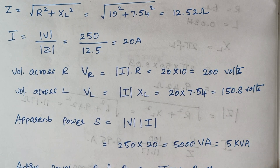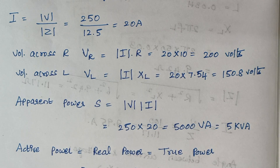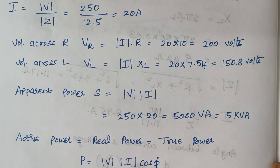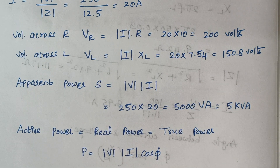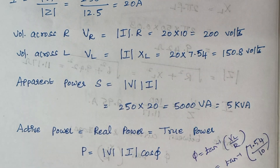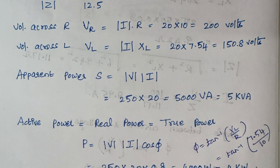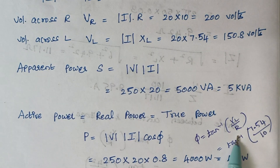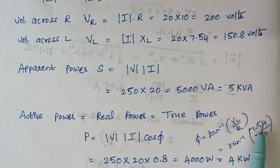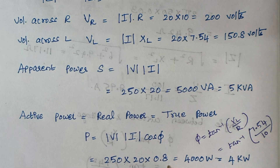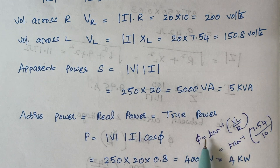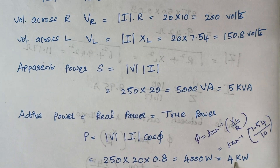Active power, also known as real power or true power, is given by the formula VI cos φ. To calculate φ, use tan inverse of XL by R. Substituting XL and R gives cos φ = 0.8 as the power factor. Multiplying V × I × cos φ gives the answer as 4000 watts, which is 4 kW.